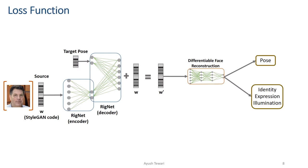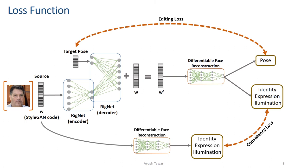We use a differentiable face reconstruction network to estimate these properties from a StyleGAN embedding. We can then enforce an editing loss which minimizes the difference between the target and the predicted pose parameters. For all other parameters, the consistency loss minimizes the difference between the source and the output.